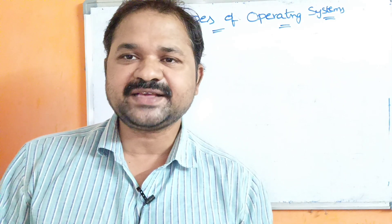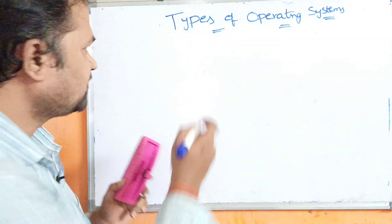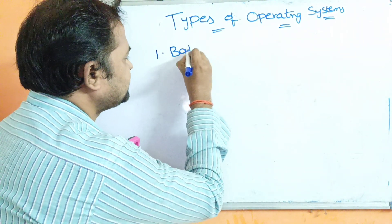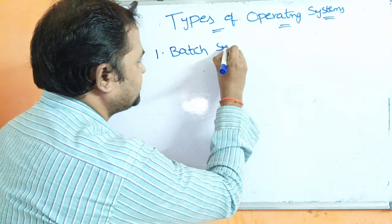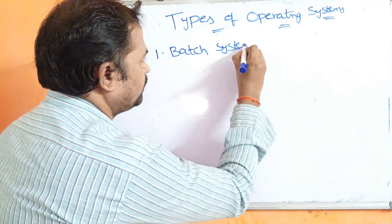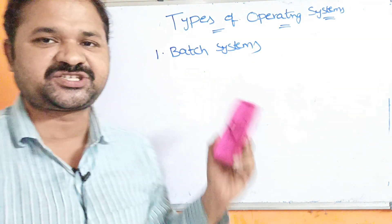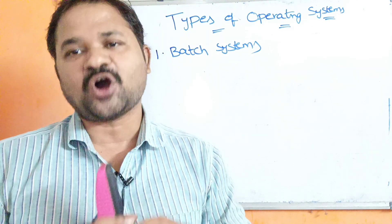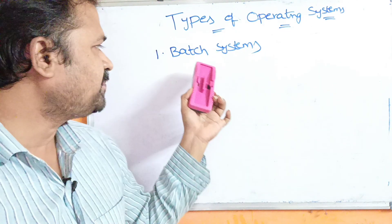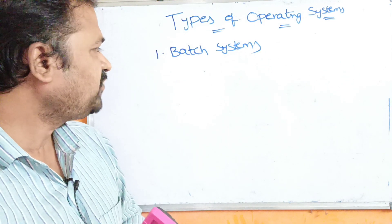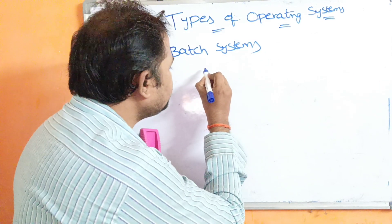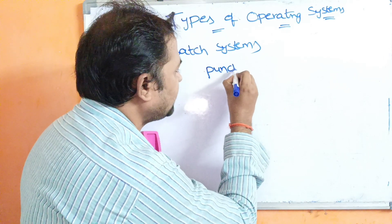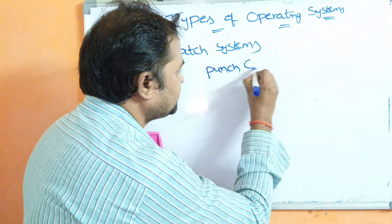The first one is batch systems. So what is a batch? Batch means a collection of jobs. In this type of operating system, the user uses punch cards. In the olden days we used batch systems with punch cards.